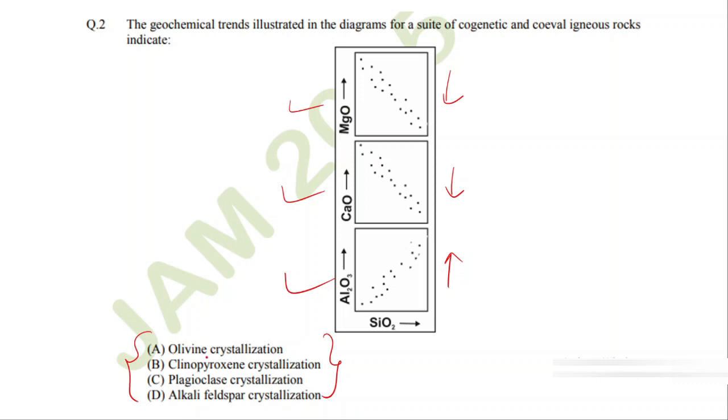First option is olivine crystallization. We know that MgO goes in olivine along with FeO, so olivine crystallization is actually taking place because MgO is showing a decreasing trend.